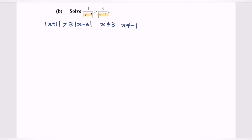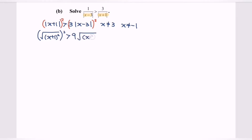Next, what we have to do is square both sides. So if we square both sides, we will have (x plus 1) squared greater than 9 multiplied with (x minus 3) squared. So kindly simplify the situation where we will have x plus 1 to the power of 2 greater than 9 multiplied with x minus 3 to the power of 2.